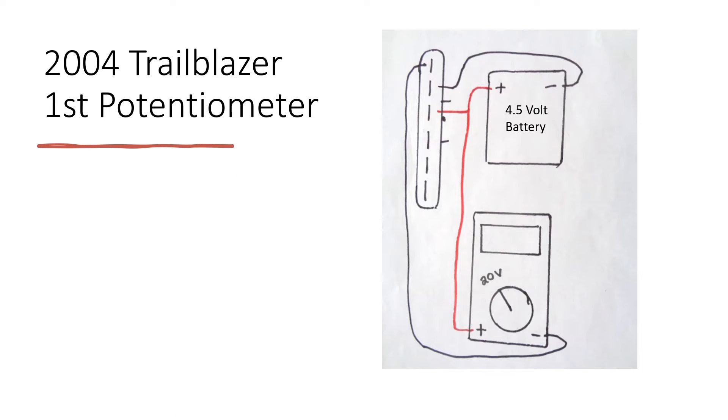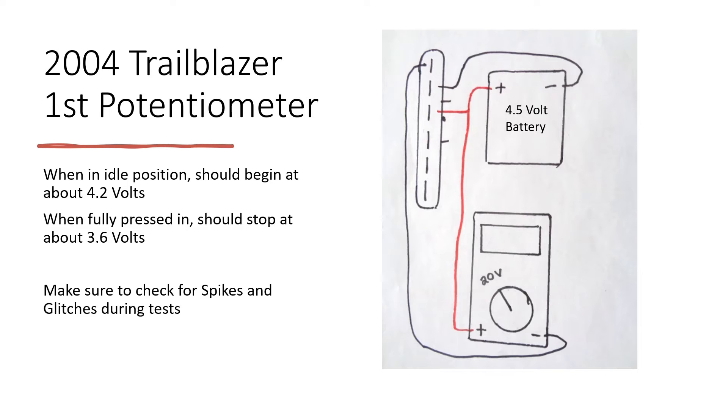After doing this it should be reading about 4.2 volts in the idle position and as you press down on the pedal itself it should end around 3.6 volts. You're checking for both spikes and glitches during these tests.